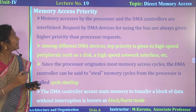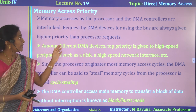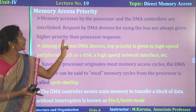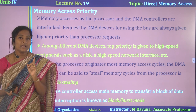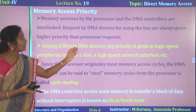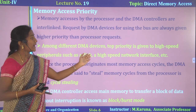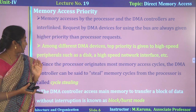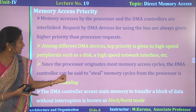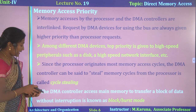Memory access priority: memory access by the processor and DMA controller are interlinked. Requests by DMA devices for using the bus are always given highest priority over processor requests. The same bus is used by both the processor and DMA controller. Among different DMA devices, top priority is given to high-speed peripherals such as disk and high-speed network interface. Since the processor originates most memory access cycles, the DMA controller can be said to steal memory cycles from the processor — this is known as cycle stealing.